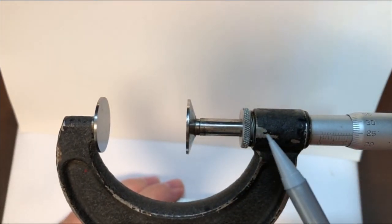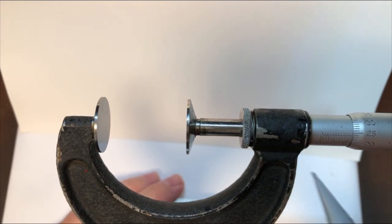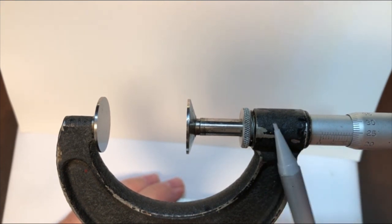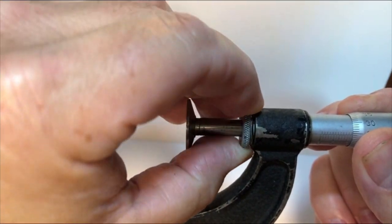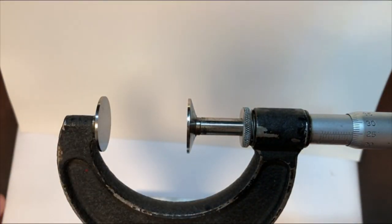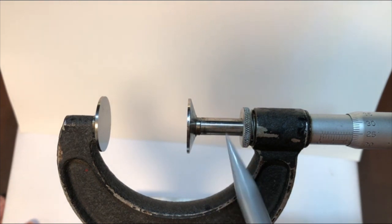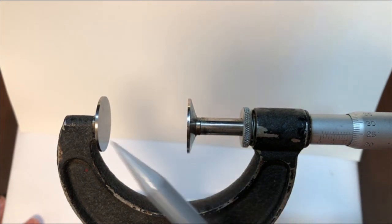We have our spindle lock. It's a little different, you guys are used to seeing the one that slides back and forth. This one just basically turns like this. We have our spindle. We have our anvils. In this case, there's two anvils on this guy.